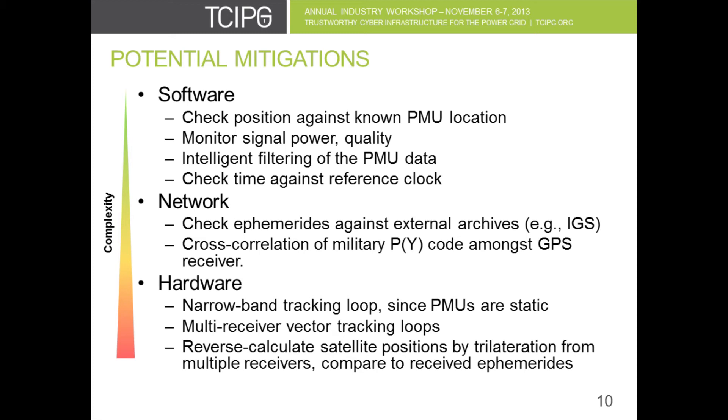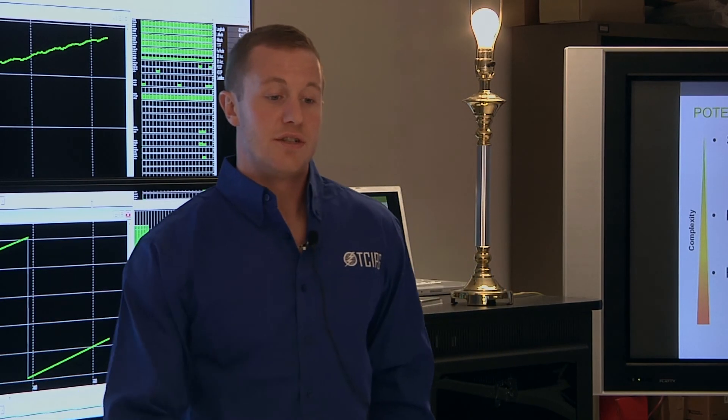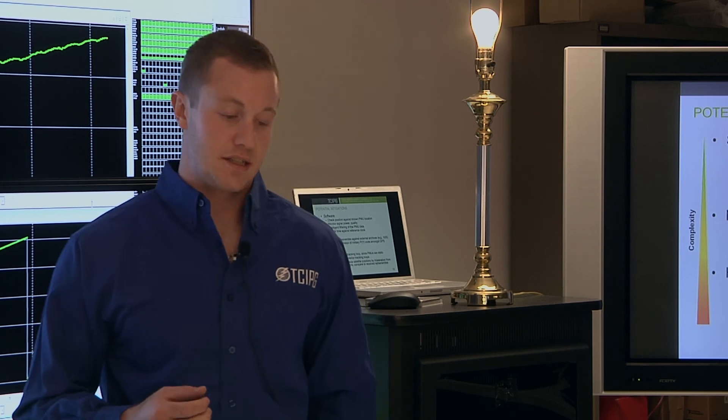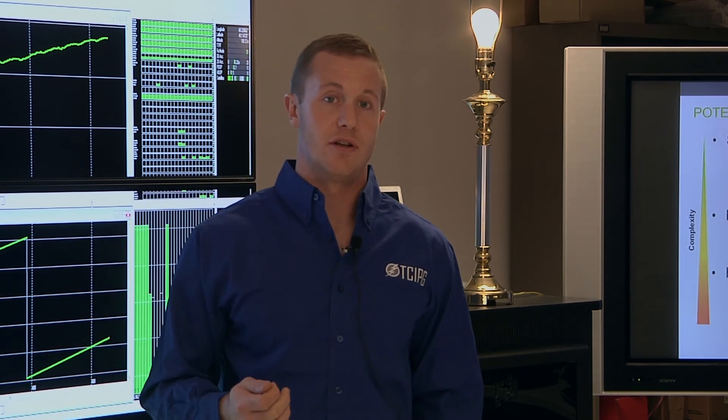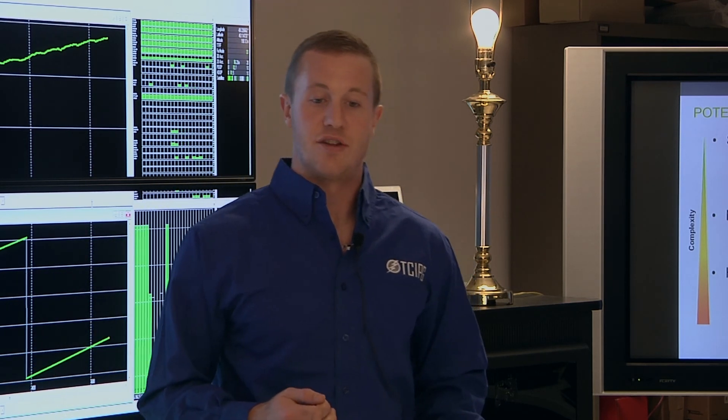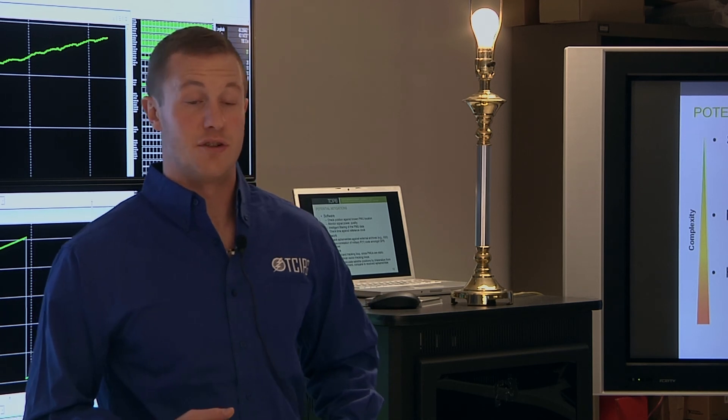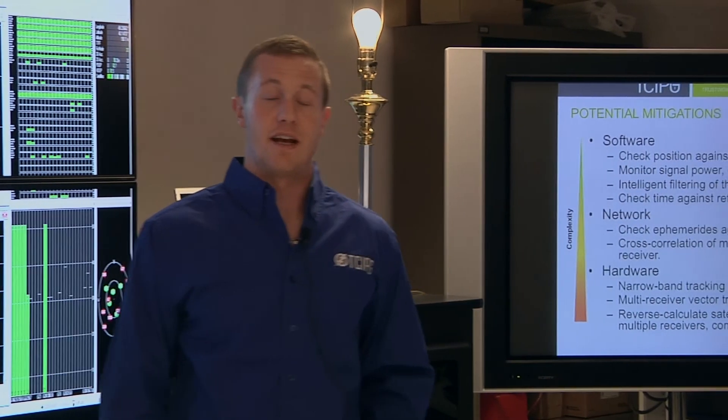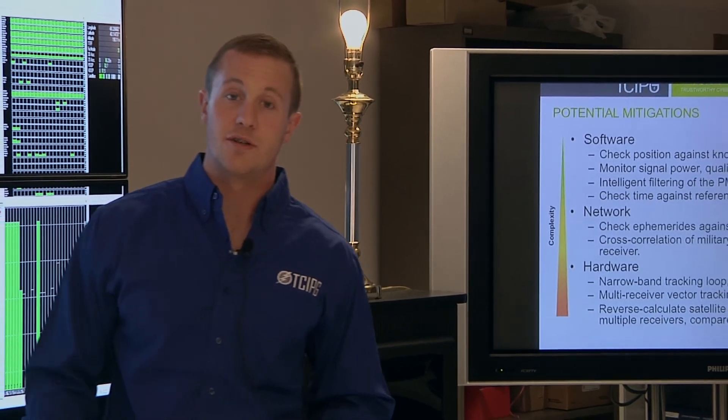The first is software techniques. These can be easily implemented on the GPS receiver software. These involve things like checking the signal power of your received signal so that when a false GPS signal is broadcast, you'll see that jump in power level on the receiver and so you'll know that a false signal may be present.